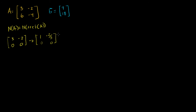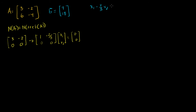That's the reduced row echelon form of A, and we want to find its null space. We want to find all vectors x1, x2 such that the product equals the zero vector in R2. The second row gives us no information — 0 times x1 plus 0 times x2 equals 0. Our only constraint is the first row: x1 minus 2/3 times x2 equals 0, or x1 equals 2/3 x2.